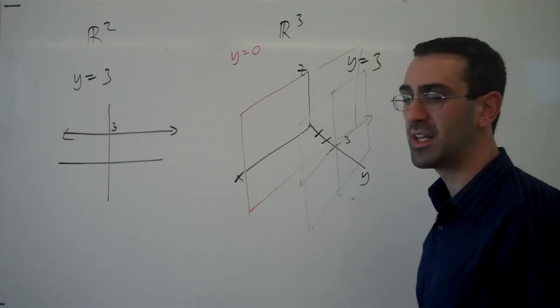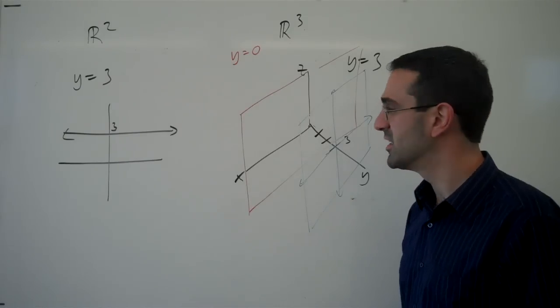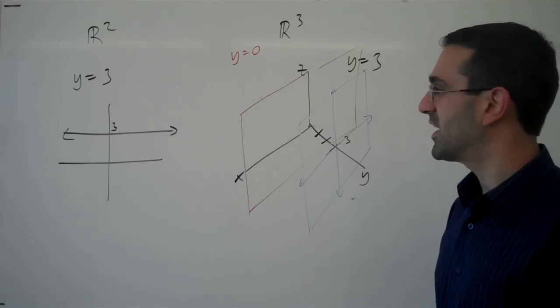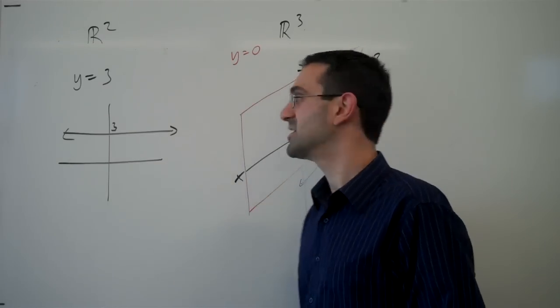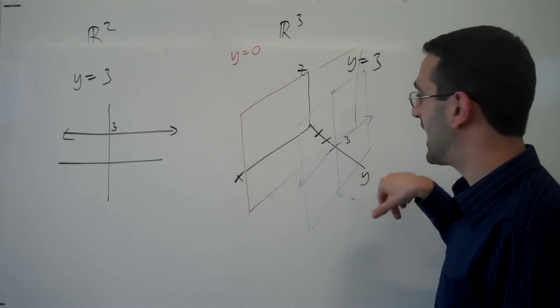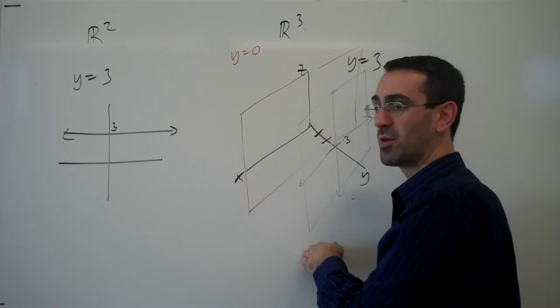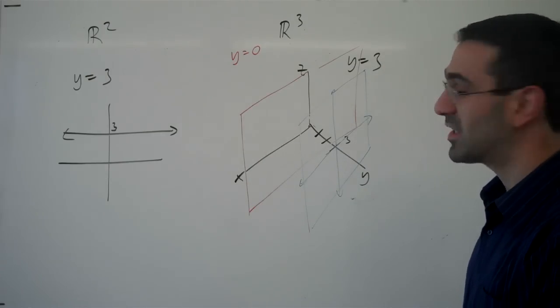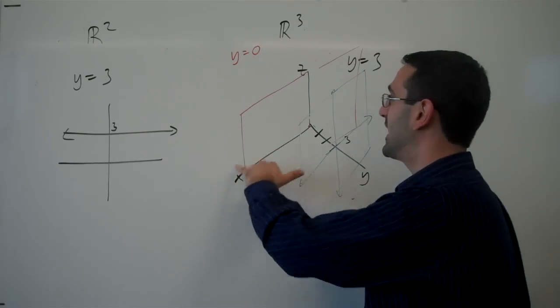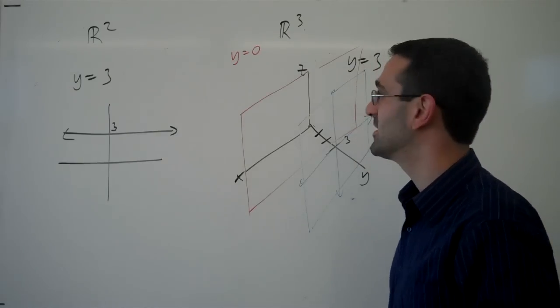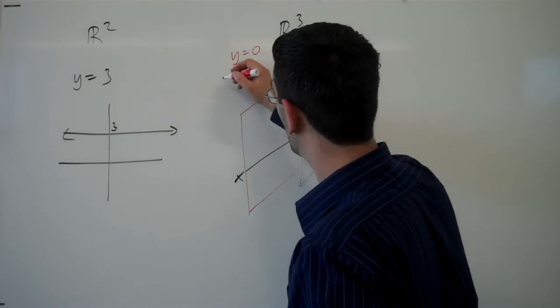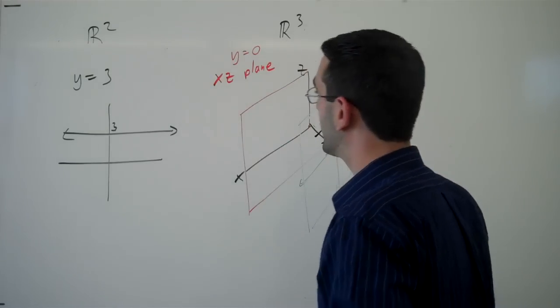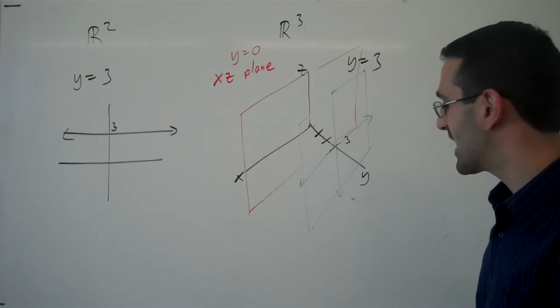That would be the plane y equals 0. And this is called one of the coordinate planes, kind of like we have the axes, the x and y axes here. We have the x, y, and z axes, but we also have the coordinate planes. So when y equals 0, we get the plane that includes the x and the z axes, and so this is sometimes called the xz plane. It is the plane that includes the x and the z axes.